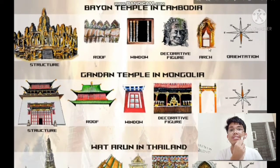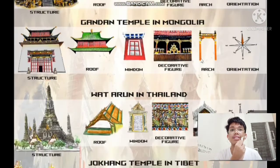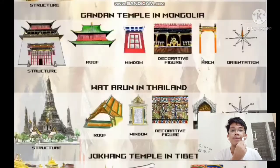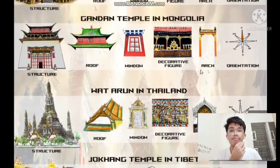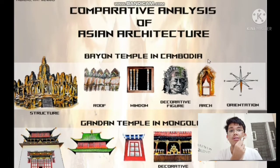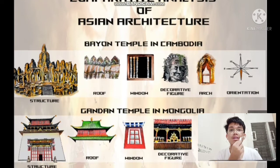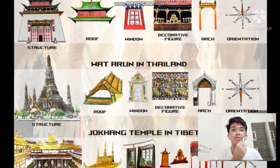In terms of arches, the arches in Sampo Thong, Jokhang Temple, and Ganden Temple in Mongolia are typified with Paifang, also known as Pailu — a traditional style of Chinese architectural arc or gateway structure. The builders of Bayon Temple failed to adopt the true arc; instead, corbel arches can be found in most of the temples in the Angkor complex. The arches from Wat Arun and most religious buildings in Thailand are characterized by pointed arches with decorative elements, similar to India.